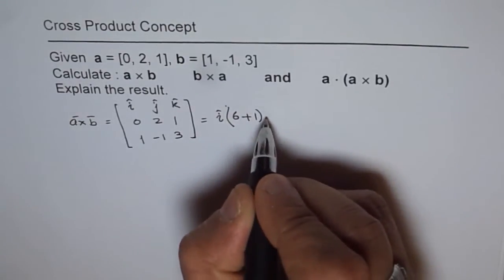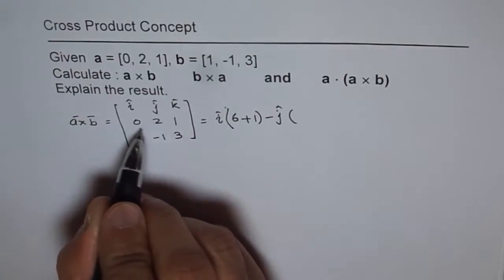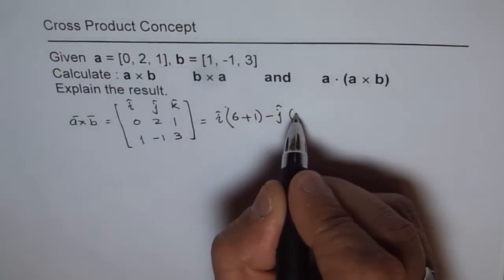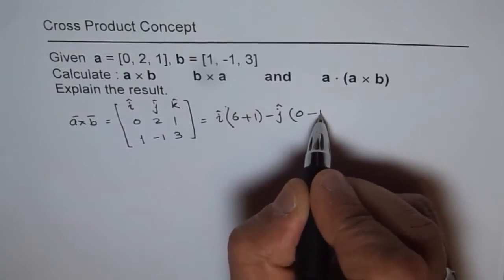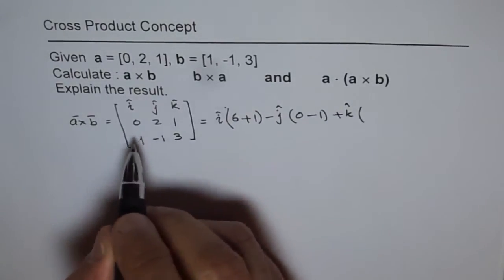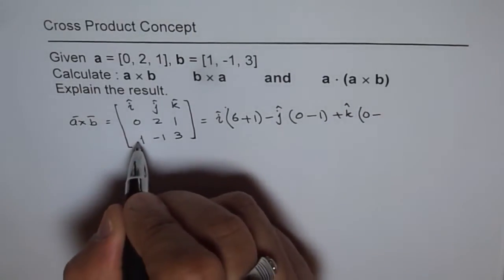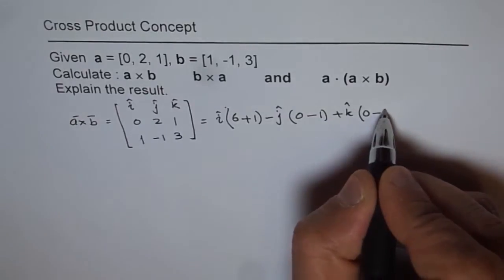Minus J times 3 times 0 is 0 minus 1 plus K, 0 times minus 1 is 0 minus 2 times 1 which is 2.